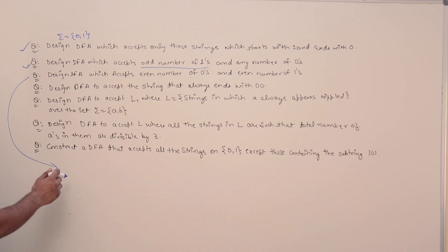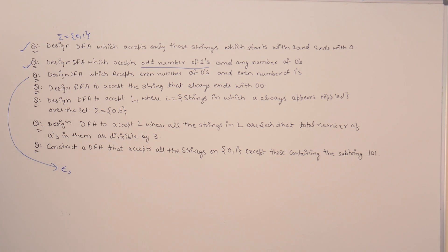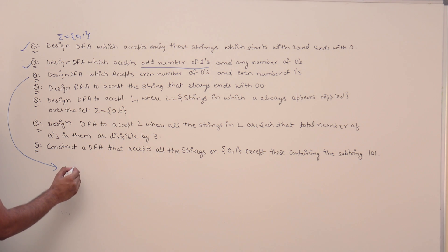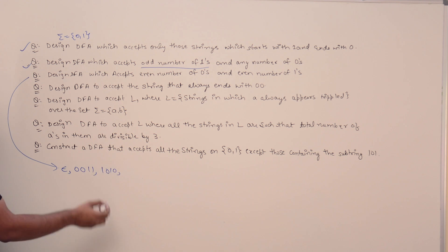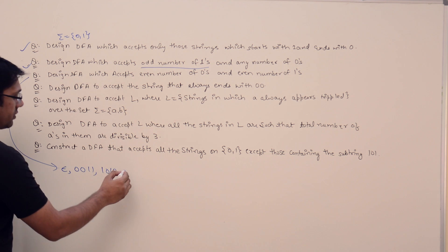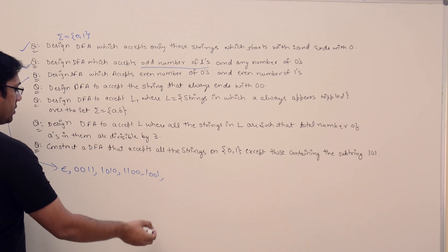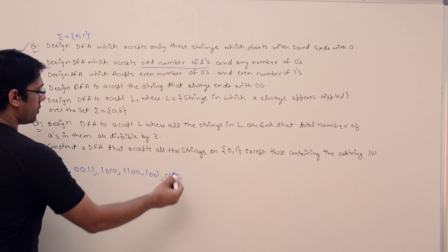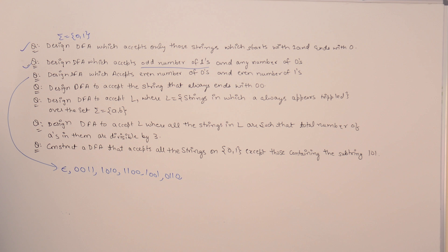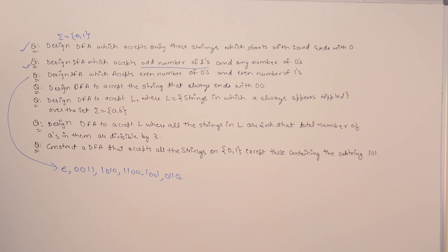What this means is we can have a string like epsilon where there are zero ones and zero zeros — that is even. We can have strings like 0011, 1010, 1100, 1001, or 0110. So this is for cases where the number of ones and number of zeros are both even.